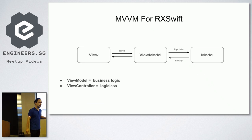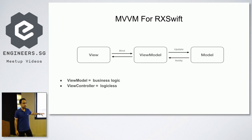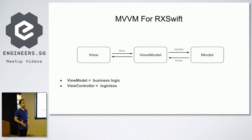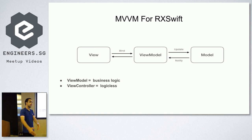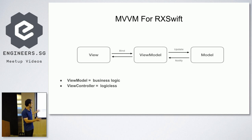We are done with the theoretical part. Now we are going to dive into the coding stuff. I'm going to use MVVM. MVVM works very well with almost any kind of reactive framework because it's lightweight, and MVVM separates your business logic from the view controller. All you have to do is put all the logic inside the view model, and the view controller is oblivious to what's happening logically inside the view model. You can think of the view model as acting like a brain, and your view controller becomes logicless.